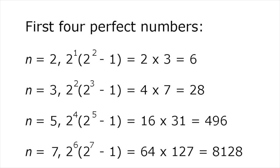For example, the first 4 perfect numbers are generated like this. For n equals 2, 2 to the 1 times 2 squared minus 1 equals 6. For n equals 3, 2 squared times 2 cubed minus 1 is 28.